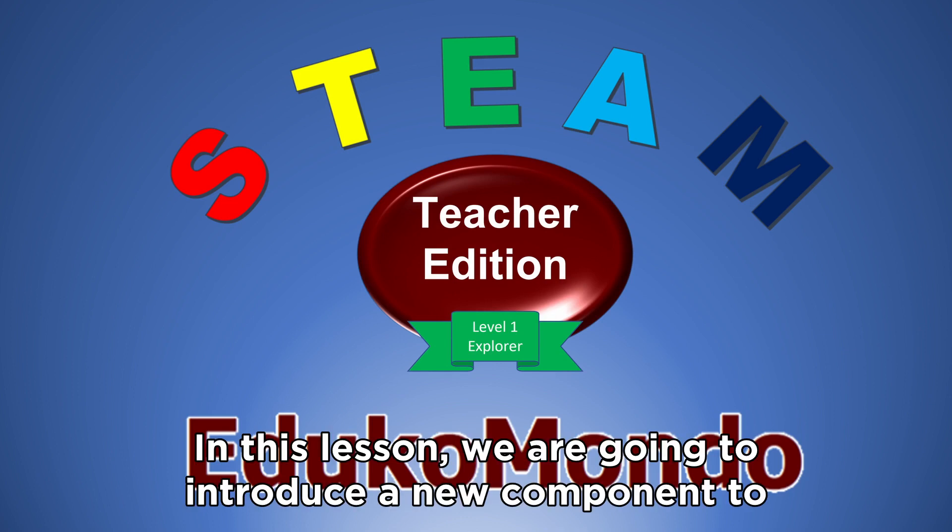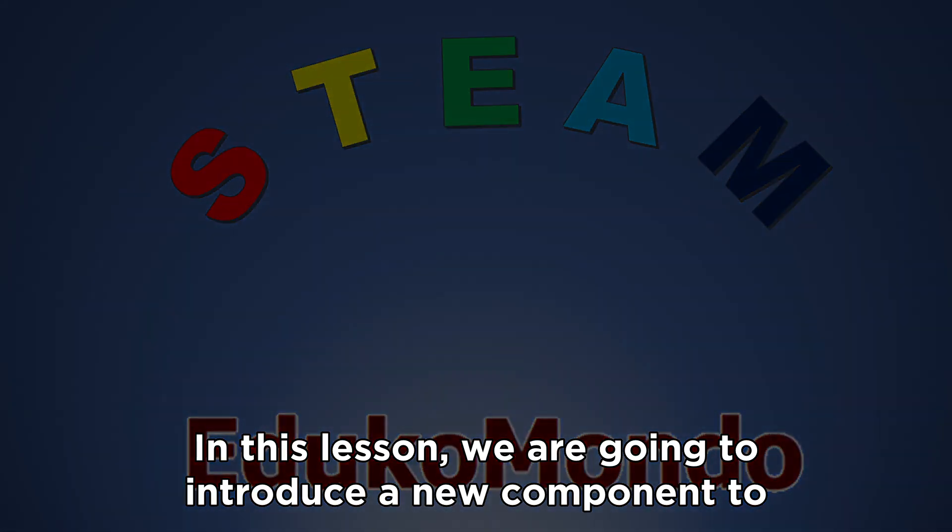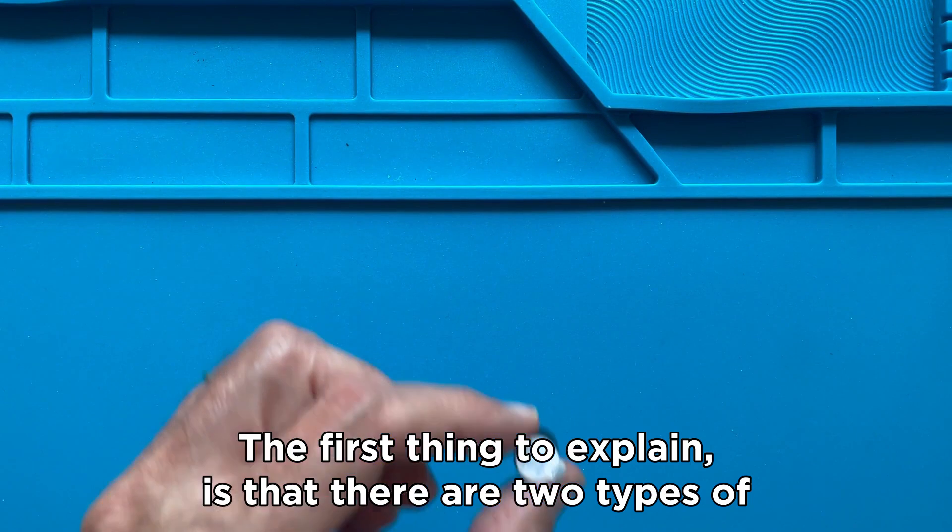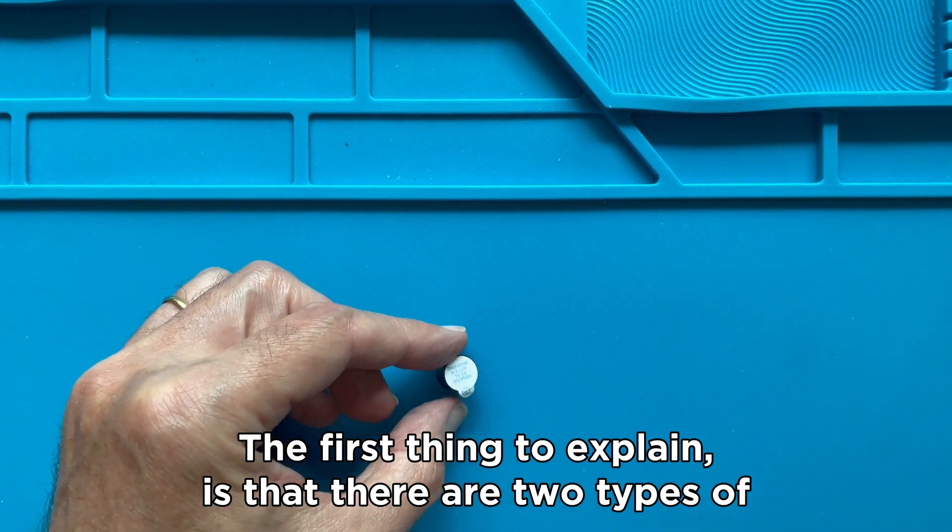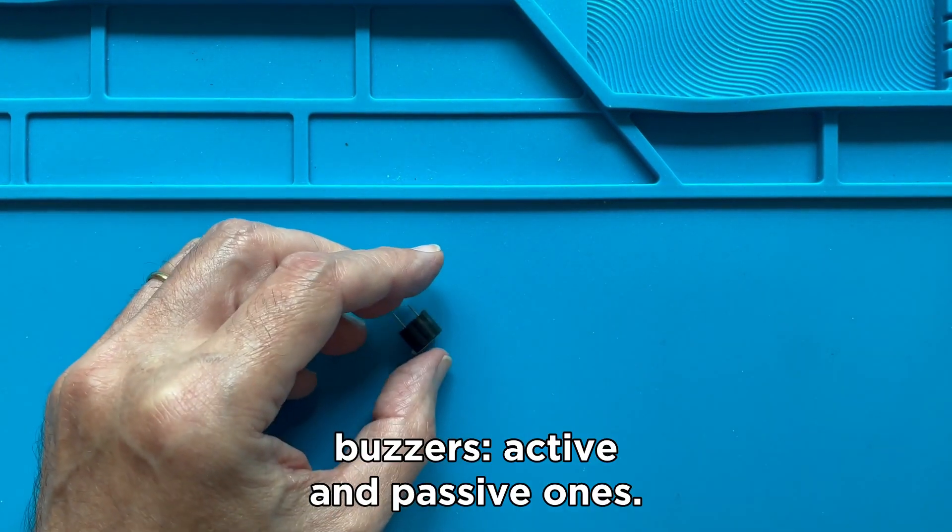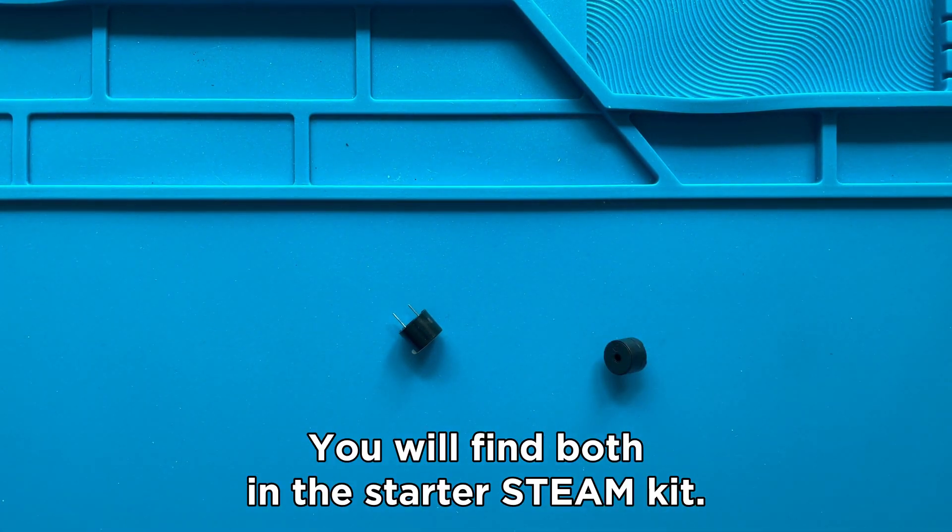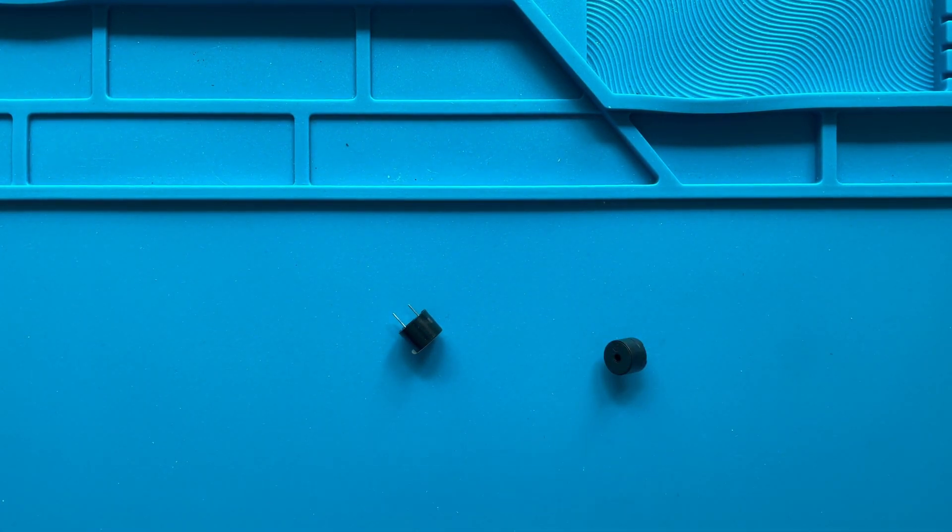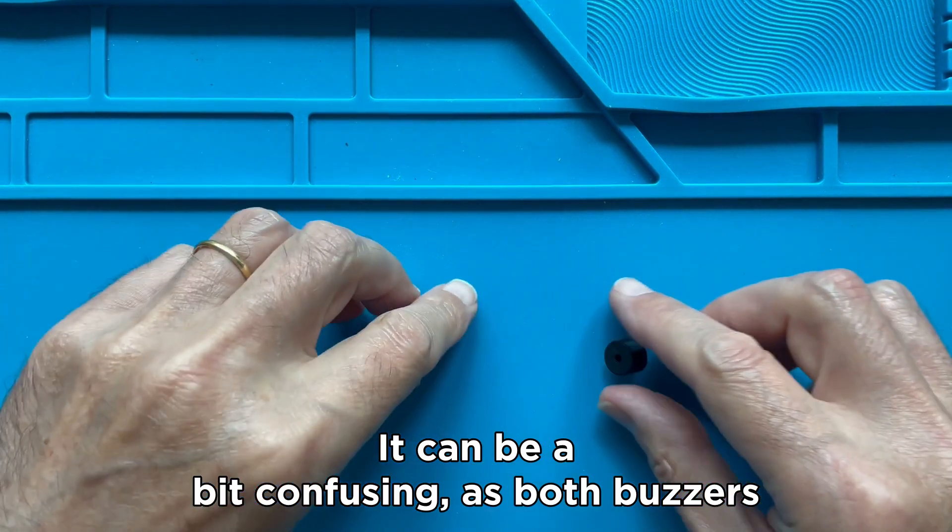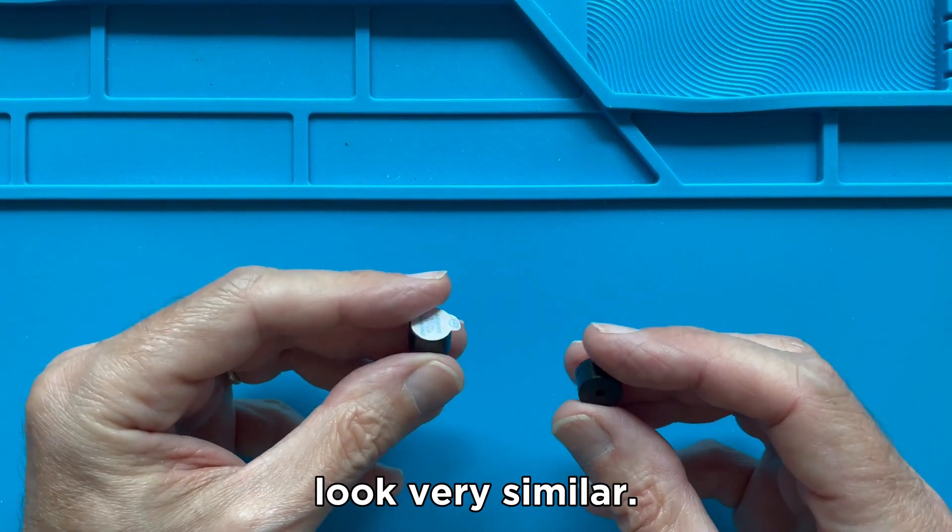In this lesson we are going to introduce a new component to our class, the buzzer. The first thing to explain is that there are two types of buzzers, active and passive ones. You will find both in the starter STEAM kit. It can be a bit confusing as both buzzers look very similar.